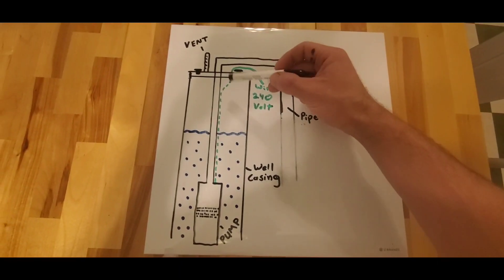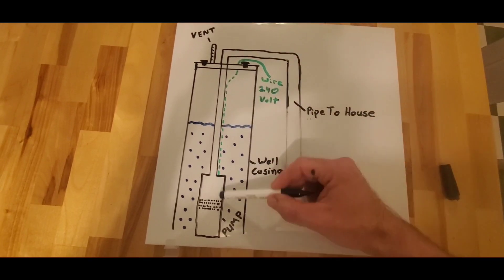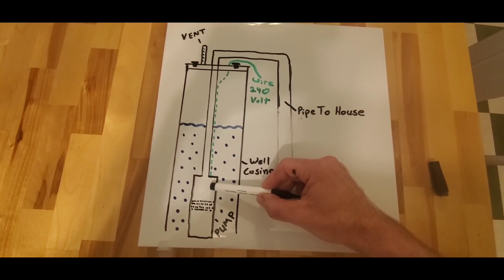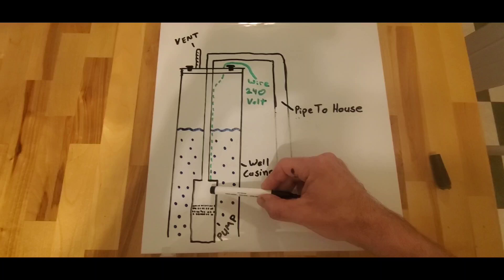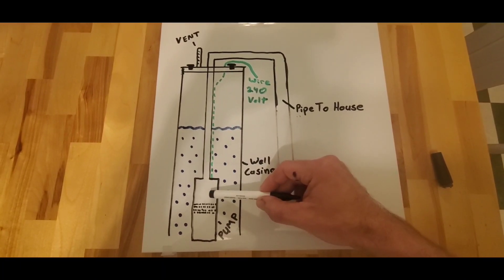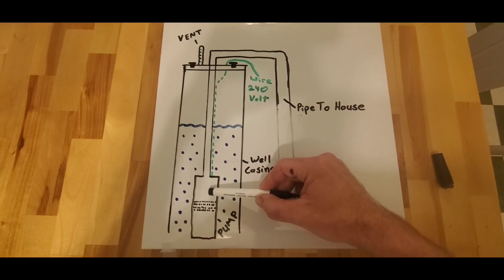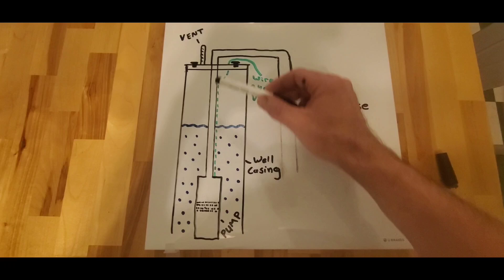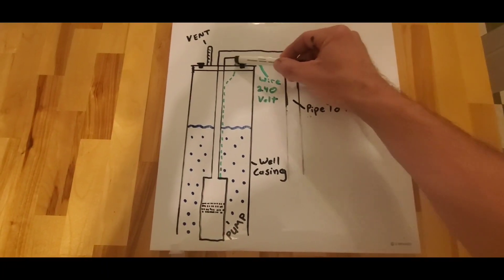So what ends up happening is you have your pump down here and typically the pressure in your house is somewhere around 50 to 60. Well, the pump actually has the capabilities of pumping 200, 215 PSI.